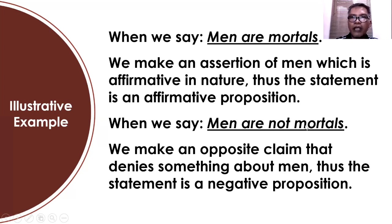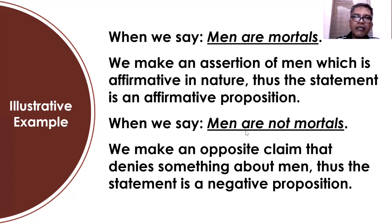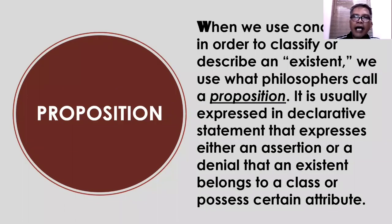But when we say 'men are not mortals,' having a negative word, we make an opposite claim that denies something about men — thus the statement is a negative proposition. The first example gives assertion, the second gives denial. We affirm or assert something about men in one, and we deny something about men in the other. That is what we call proposition — a declarative statement that expresses either an assertion or denial that an existence belongs to a class or possesses certain attributes.